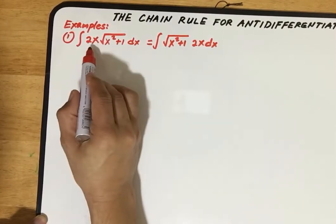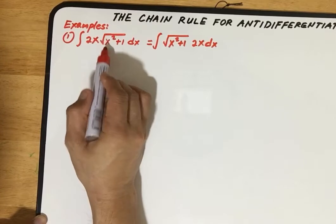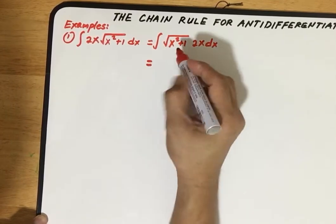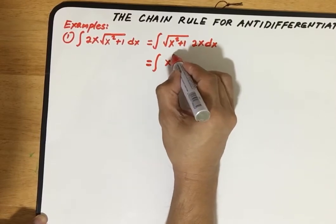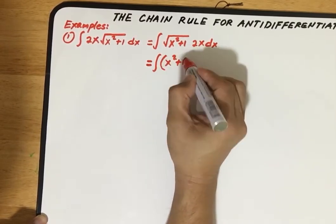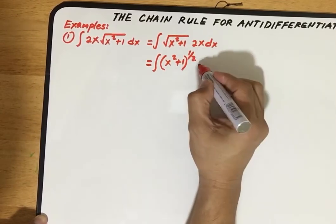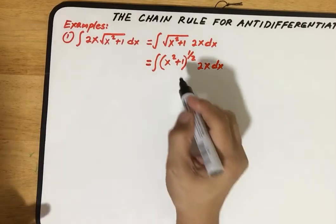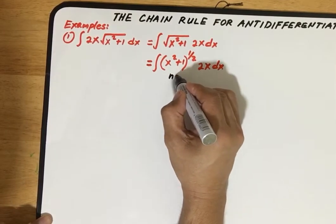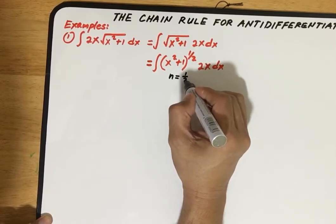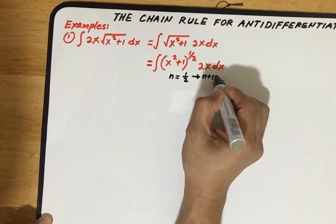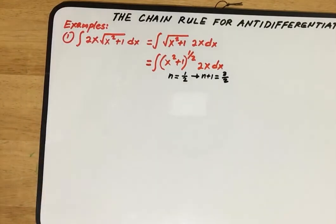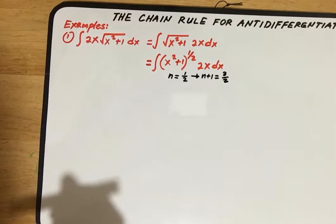They are just the same — we are just rearranging the position of 2x and rewriting the radical. Then we rewrite in terms of rational exponent: the integral of (x squared plus 1) raised to the power 1/2, multiplied by 2x dx. From that new expression we can see that our n is equal to 1/2, and from here we can solve for n plus 1, which is equal to 3/2.